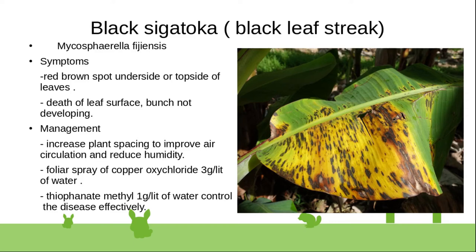Black leaf streak disease is caused by Mycosphaerella fijiensis. Symptoms include red-brown spots on the underside or top side of leaves.